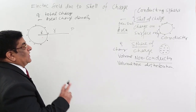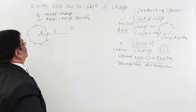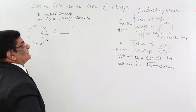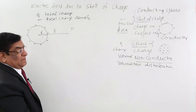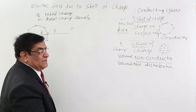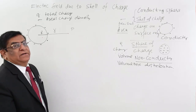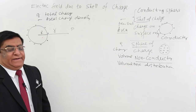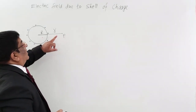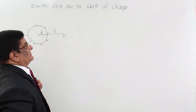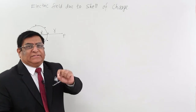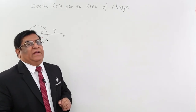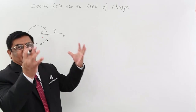Now we start the Gauss theorem calculation. Point number one was to consider a Gaussian surface. So I make a Gaussian surface. The Gaussian surface best suited for this purpose is another spherical shell over this sphere. There is a big ball and a small ball — the small ball is kept inside and the big ball is over it. Both have the same center.